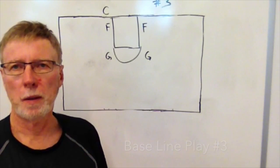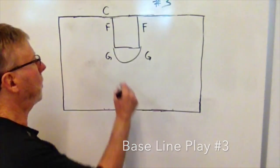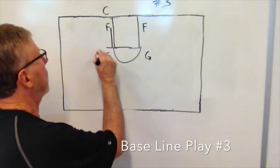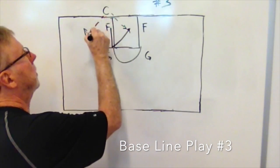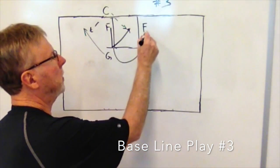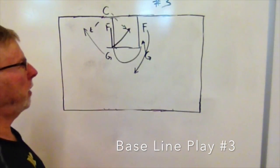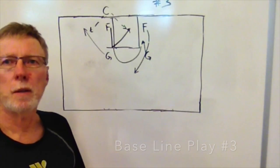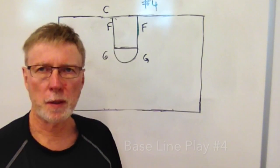Play number three is a simple up-screen on the guard. Set up as if running play one or two, the guard cuts out and the forward rolls. On the weak side, these players exchange. If the guard brings the ball back out, this guard comes back out and that forward goes down, putting us right into our offense. That's play number three for our baseline out-of-bounds.